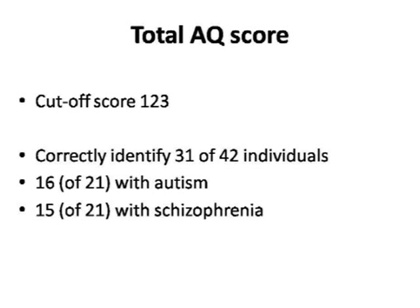We looked at the total AQ score using a paradigm where each question scores 1 to 4 points. We arrived at a cut-off score of 123, which could correctly identify 31 of these 42 individuals — 16 with autism and 15 with schizophrenia. This means the AQ is not only usable to distinguish autism from a neurotypical group, but is also valuable in distinguishing autism versus schizophrenia. This is hopeful for clinicians.